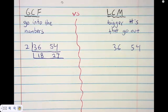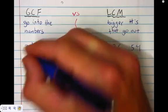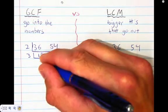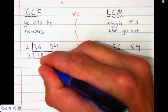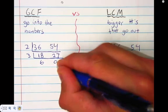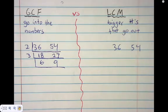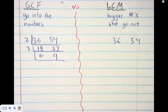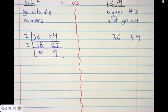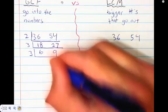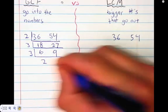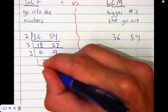Does anything go into 18 and 27? We put 3 out here - that goes into 18 six times and into 27 nine times. Does anything go into 6 and 9? Three goes in there 2 times and in there 3 times.